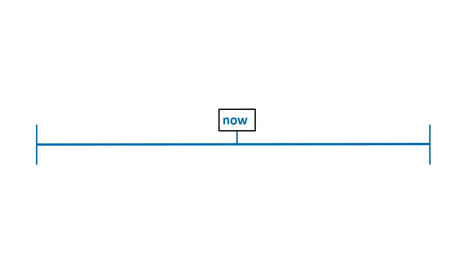Let's look at some tenses now, some verb tenses. As we see, we have here 'now.' This is the present. This is now.